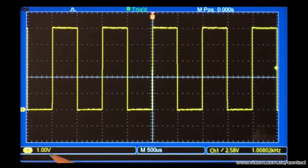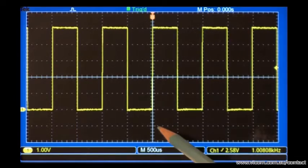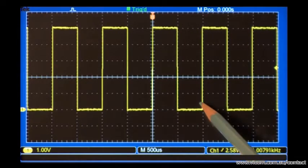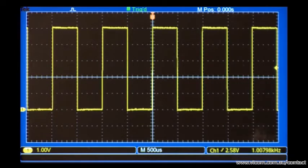Each vertical division represents 1 volt. Since the period of our signal is 2 divisions long, we can multiply 2 by 500 microseconds to get a period of 1 millisecond.